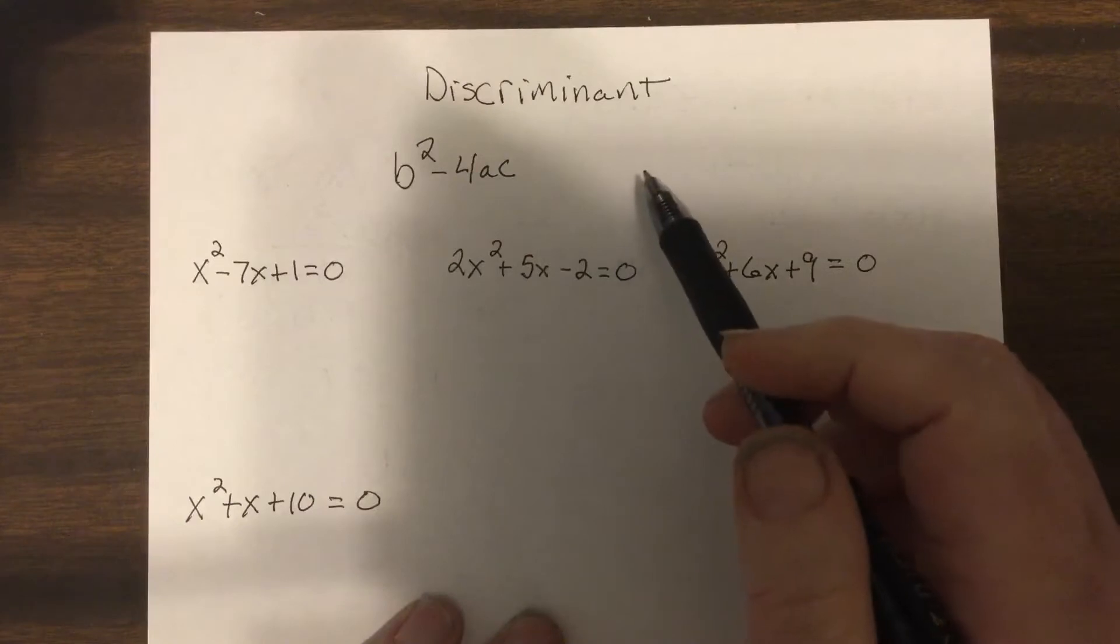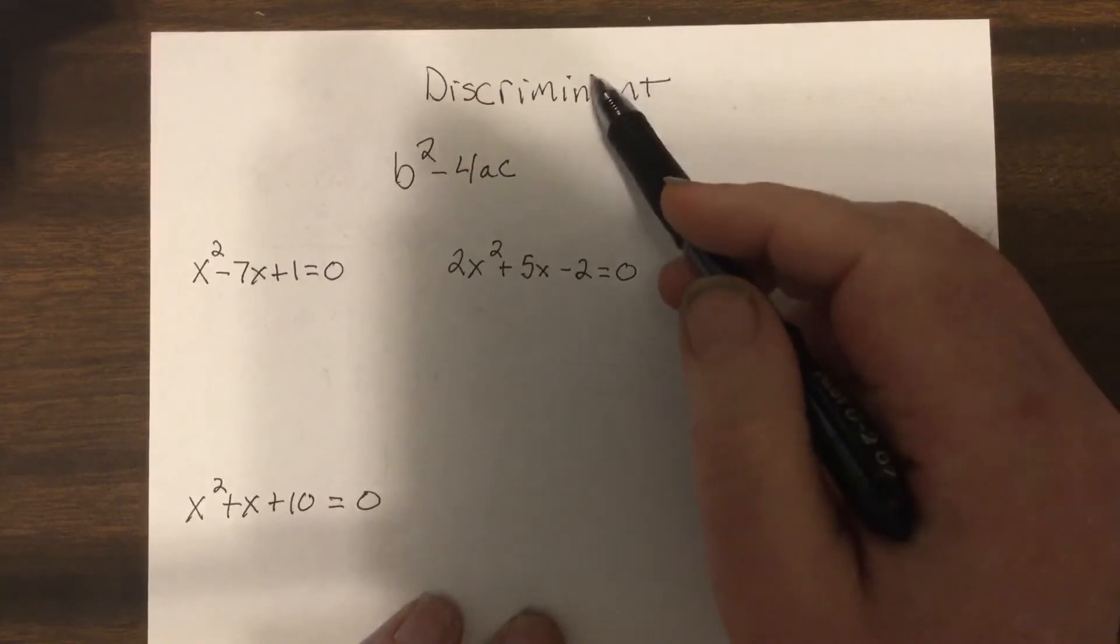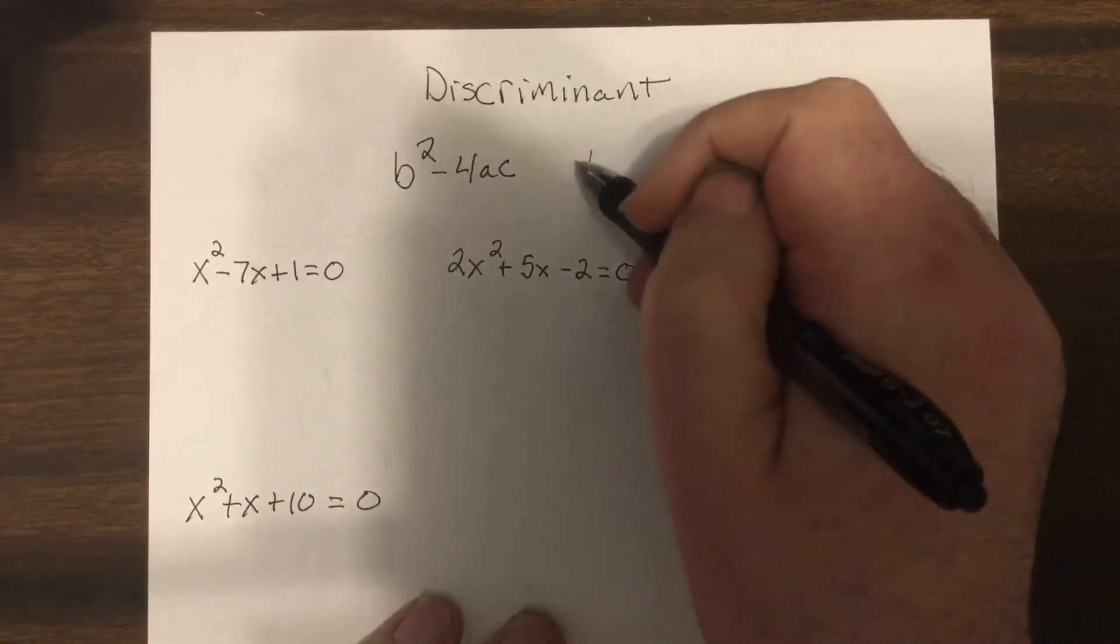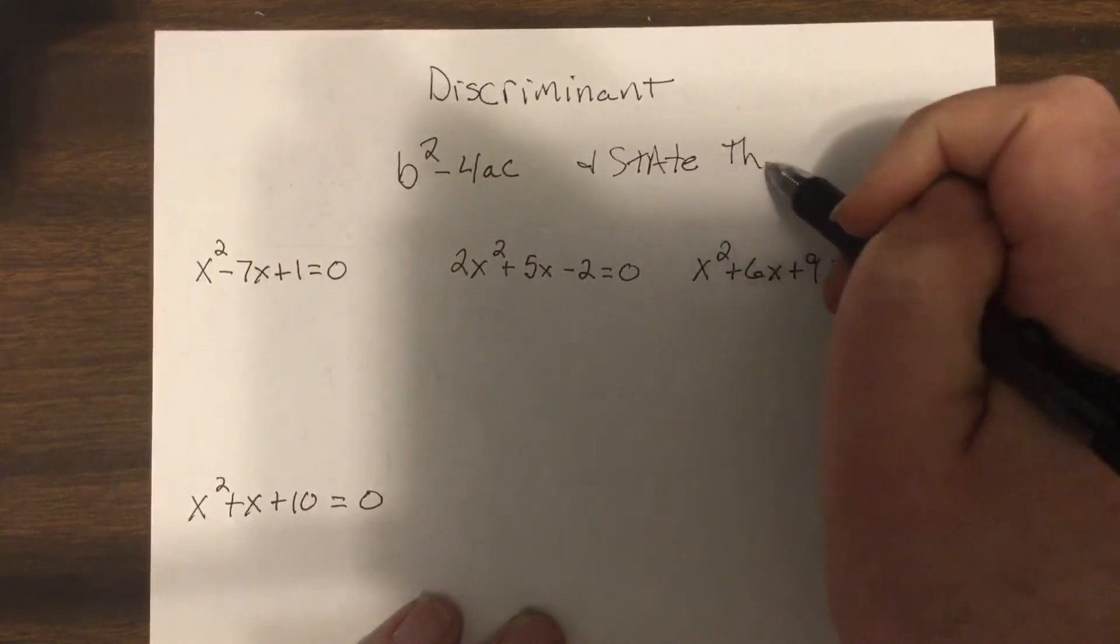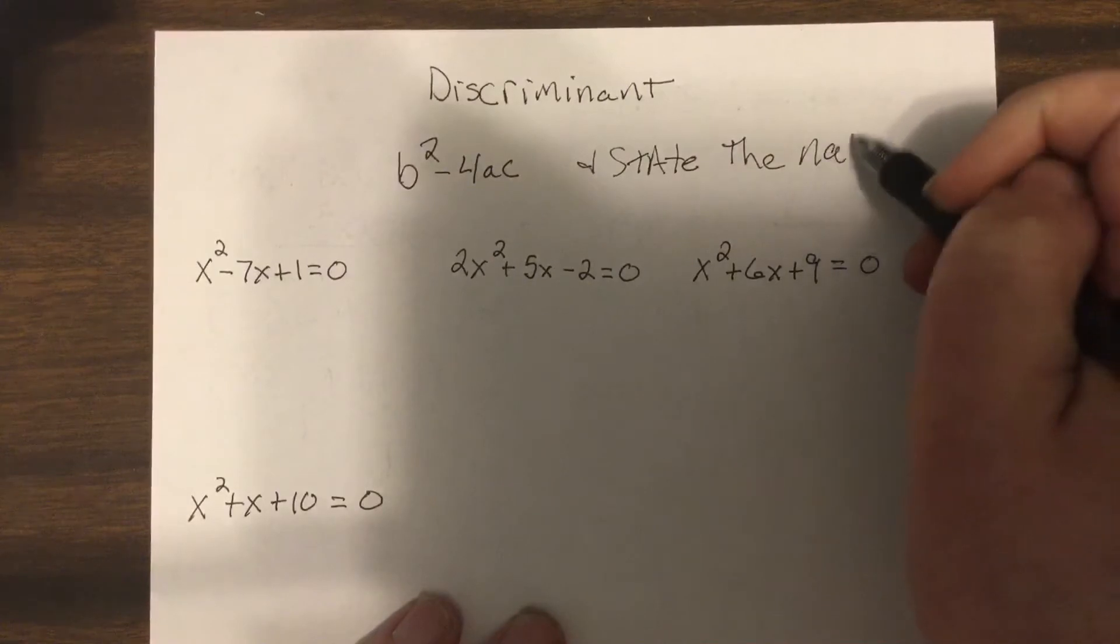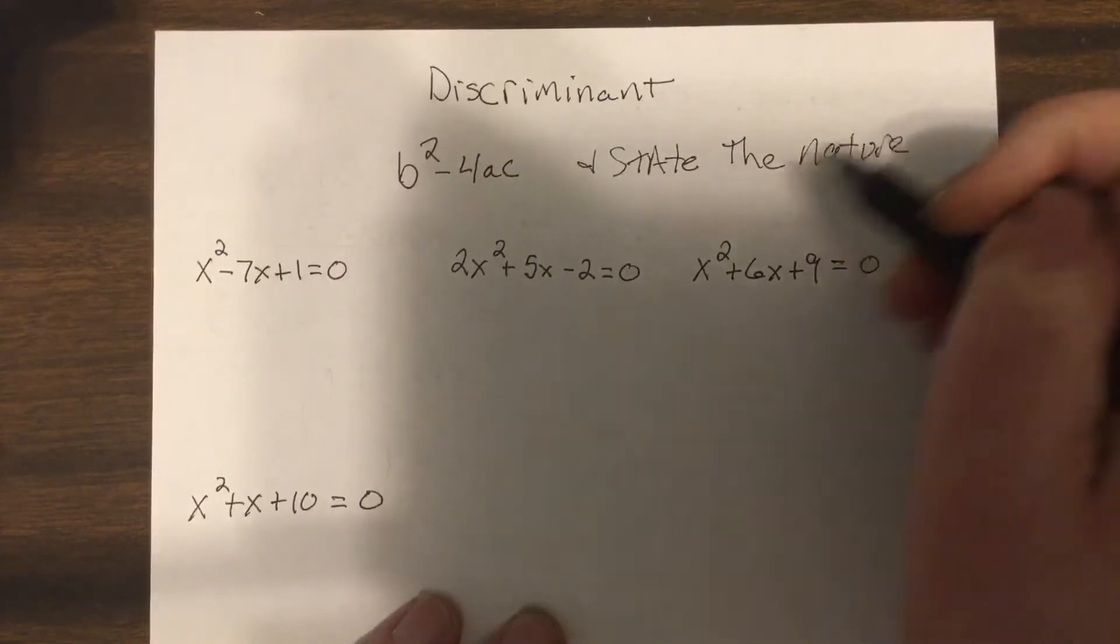So you're going to be asked to do two things, find the discriminant and state the nature of the roots.